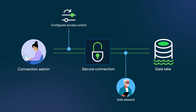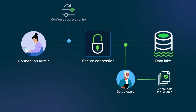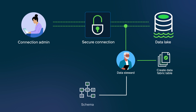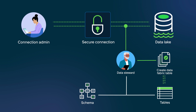Then the data steward selects the established connection in the Workflow Data Fabric Hub and creates a data fabric table. The data steward explores the available schema, selects a source table with the required data, and maps columns between the source table and the data fabric table.